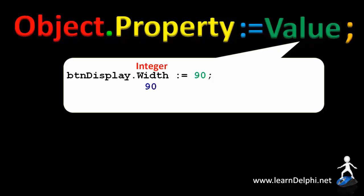In this example, we assign the value 90 to the width property of btnDisplay. An integer property can also get a value from a result of an expression, like a calculation. In this example, we assign the value 90 plus 10 to the width property. The result is a value of 100.